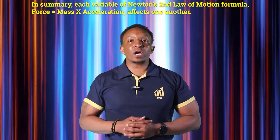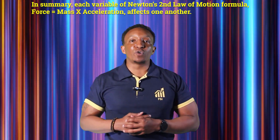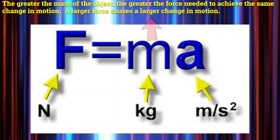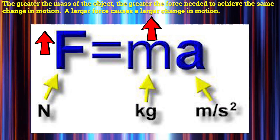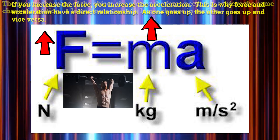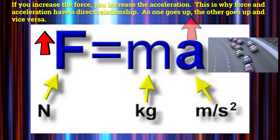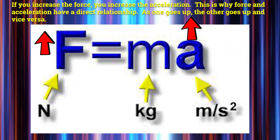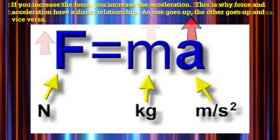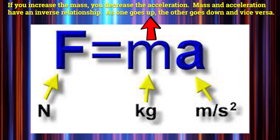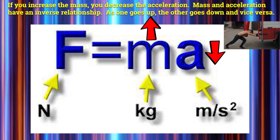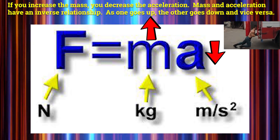In summary, each variable of Newton's second law of motion — force equals mass times acceleration — affects one another. The greater the mass of the object, the greater the force needed to achieve the same change in motion. A larger force causes a larger change in motion. If you increase the force, you increase the acceleration, which is why force and acceleration have a direct relationship — as one goes up, the other goes up and vice versa. If you increase the mass, you decrease the acceleration, so mass and acceleration have an inverse relationship — as one goes up, the other goes down.